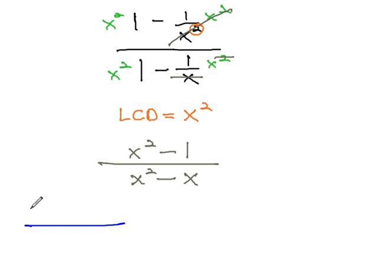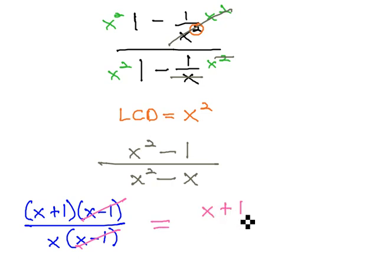By first factoring the numerator and denominator. The numerator, x squared minus 1, is a difference of squares: x plus 1, x minus 1. The denominator has a GCF of x, leaving behind x minus 1. We see the common factor of x minus 1 dividing out, and we get our final answer of x plus 1 over x for our solution.